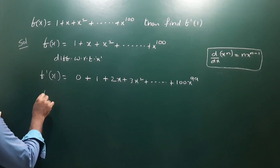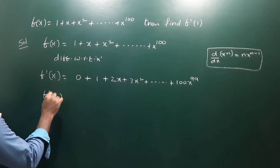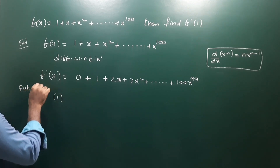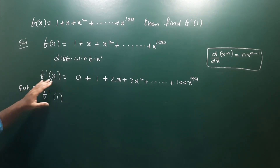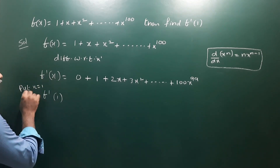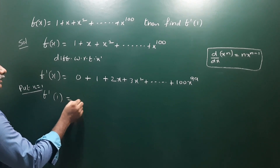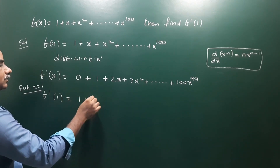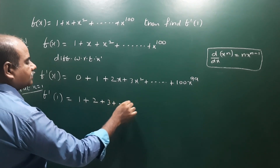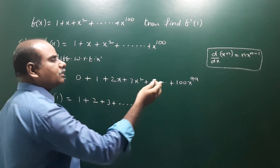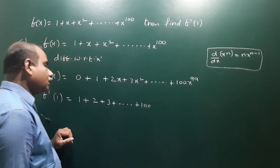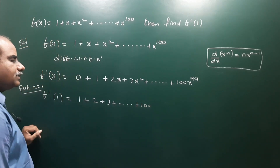Now we have to calculate f'(1), that means put x = 1 in f'(x). So f'(1) = 1 + 2×1 + 3×1² + ... + 400×1^399. Each term simplifies: 1 + 2 + 3 + ... + 400. This is nothing but the sum of the first 400 natural numbers.